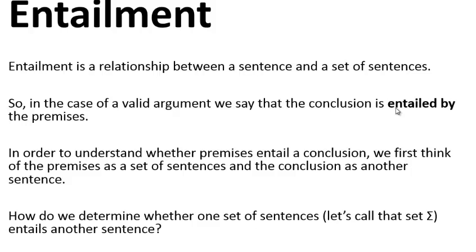We'll give a rough overview of how to understand entailment. As we've seen, it's a relationship between a sentence and some set of sentences. For a valid argument, what we'll say is that a conclusion is entailed by the premises. In order to understand whether premises entail a conclusion, we first think of the premises as a set of sentences and the conclusion as some other sentence.